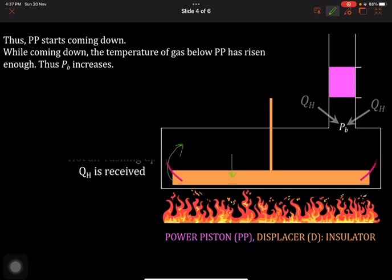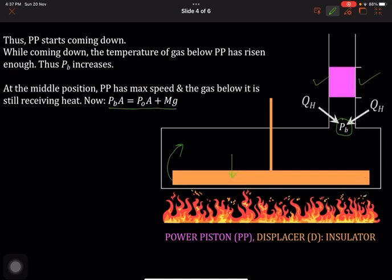Now because the hot air is moving up, the pressure here rises. At this position when the piston is at its middle, the force again balances and the piston again has maximum speed, this time in downward direction.